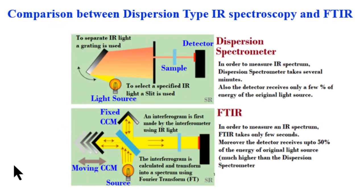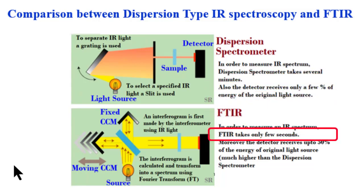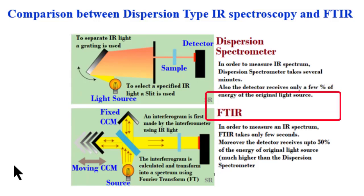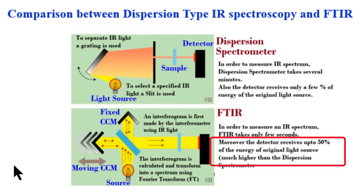If we compare dispersion-type IR spectroscopy and FTIR, FTIR is more advantageous. For dispersion-type IR spectroscopy, measuring an IR spectrum takes several minutes, whereas for FTIR it takes only a few seconds. For dispersion-type IR spectroscopy, the detector receives only a few percent of the energy of the original source, whereas for FTIR the detector receives up to 50% of the energy of the original radiation source.